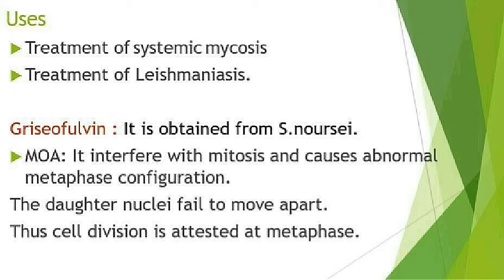Next is griseofulvin, which comes under the anti-metabolite category. Its mode of action involves mainly interfering with mitosis, causing abnormal metaphase configuration. As a result, daughter nuclei fail to move apart, and cell division is arrested. The main function of griseofulvin is to arrest cell division.